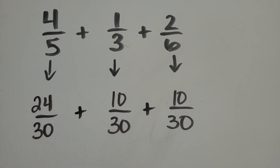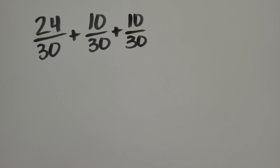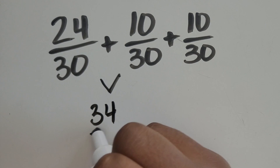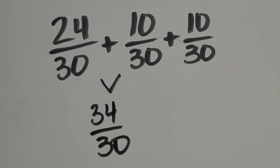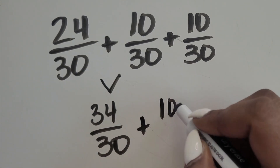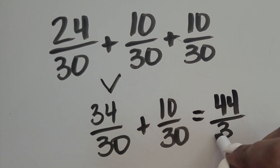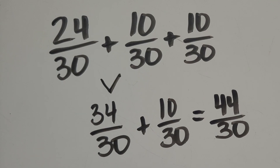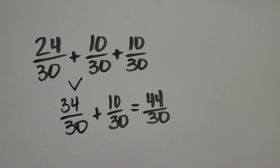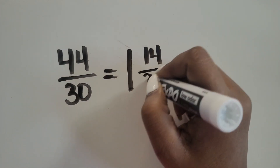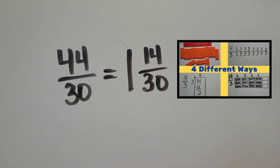Now that we have equivalent fractions to the original fractions with all common denominators, can we add them together? Yes. 24 thirtieths plus 10 thirtieths equals 34 thirtieths. 34 thirtieths plus 10 thirtieths equals 44 thirtieths. The sum of the fractions is 44 thirtieths. We can rename this fraction greater than 1 as a mixed number. To learn the steps to do this, watch my video on converting fractions to mixed numbers.